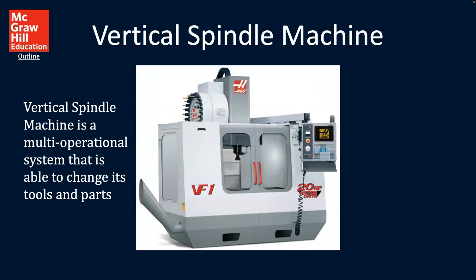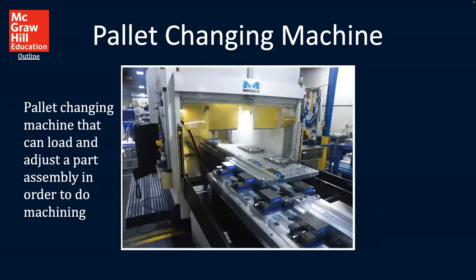Here is what's called a vertical spindle machine, and it is a multi-operational system that is able to change its tools and parts. You can take things on and off, so you have more precision tools that are geared for different types of machining products that you would be working on.